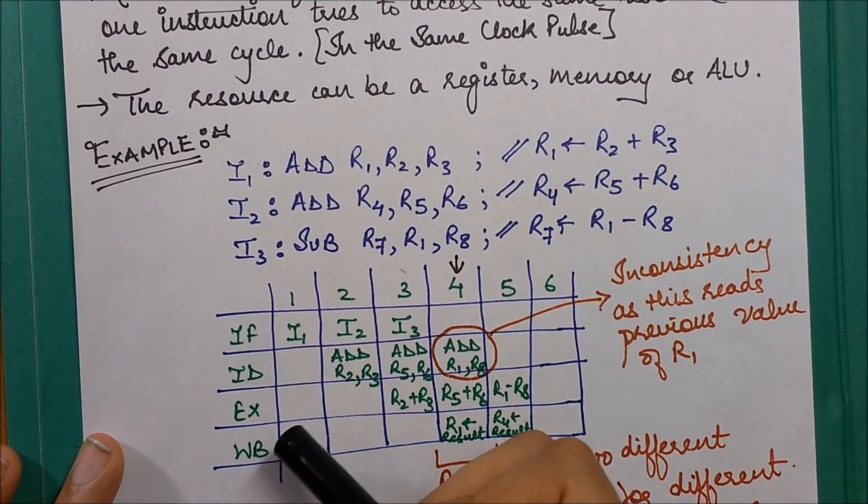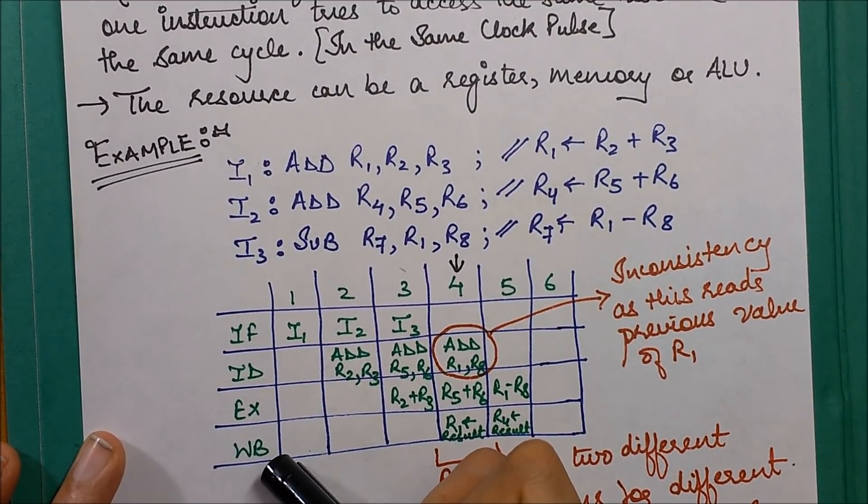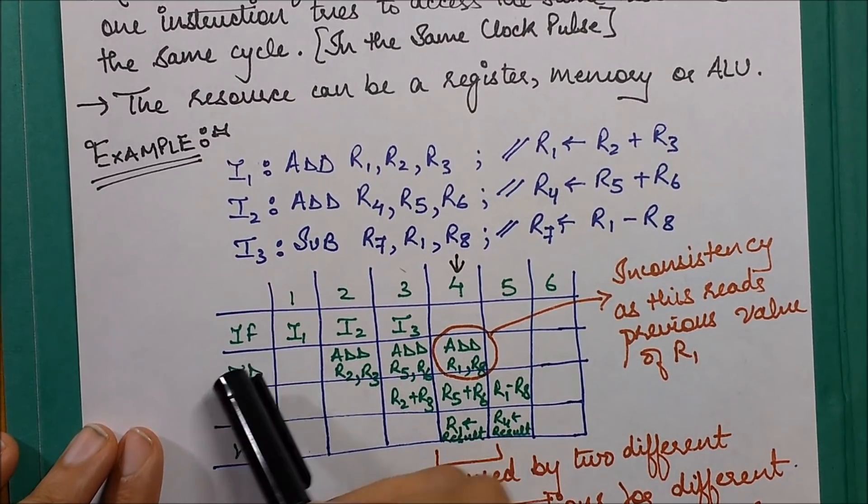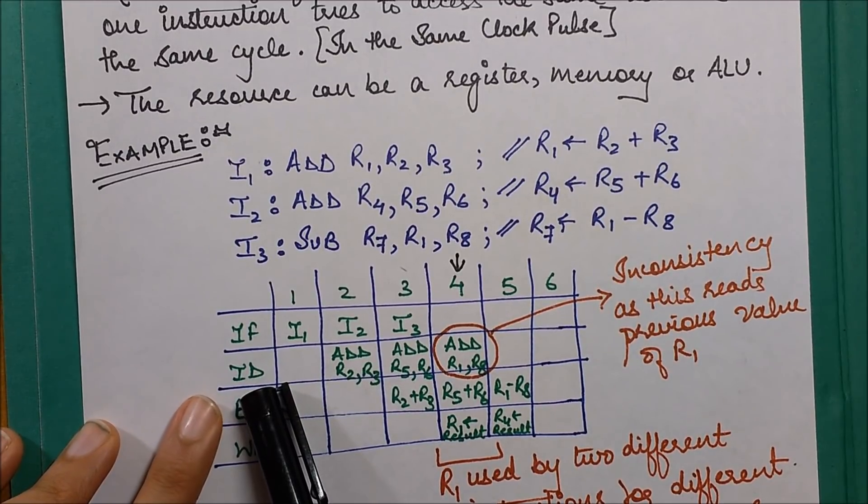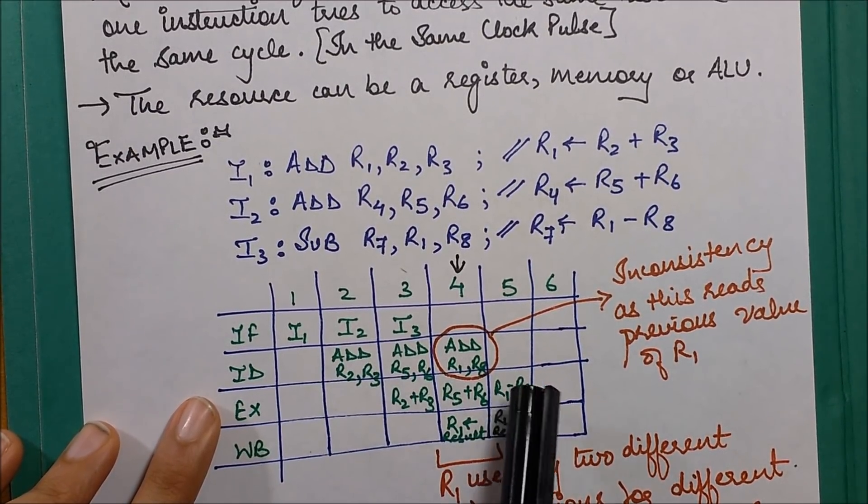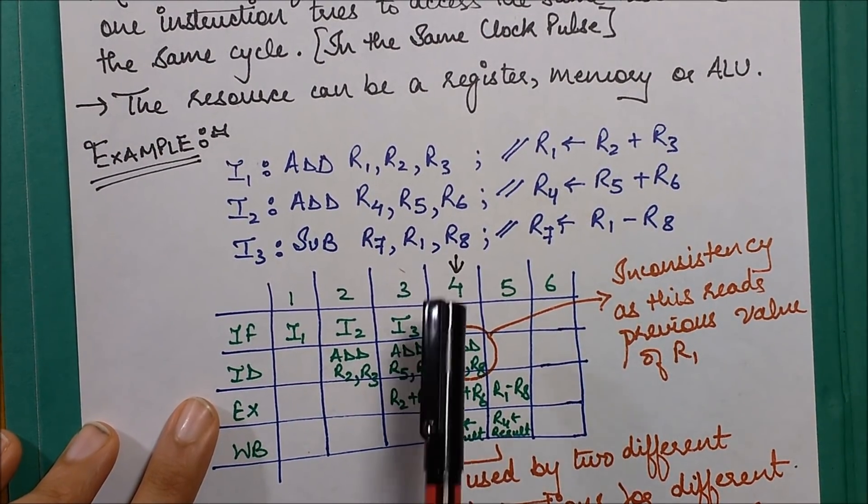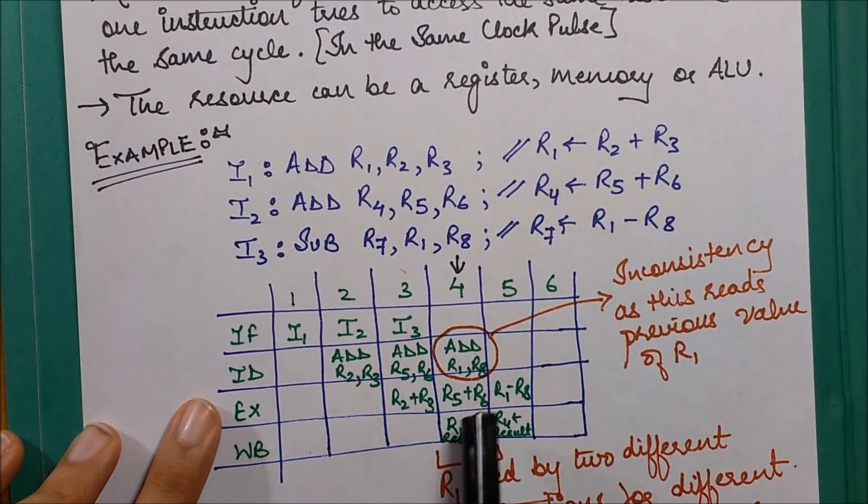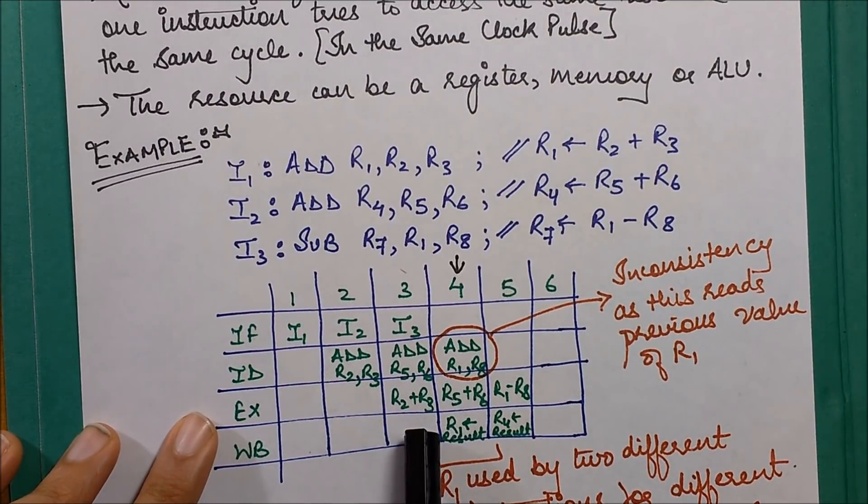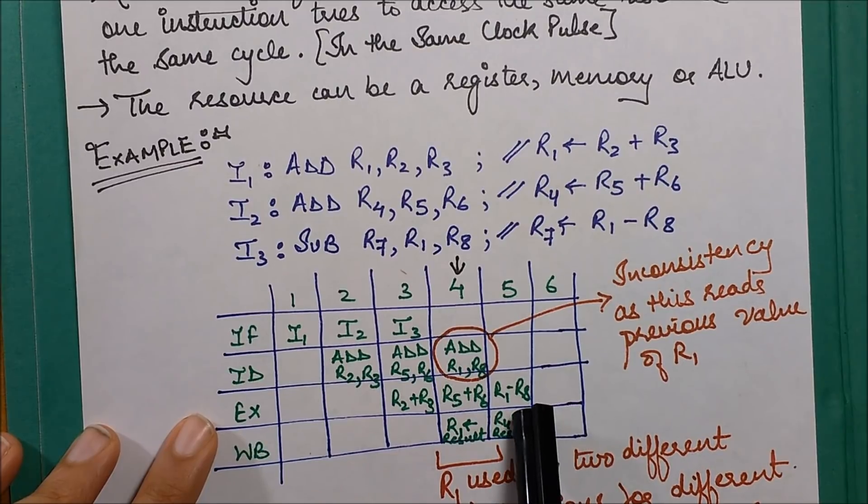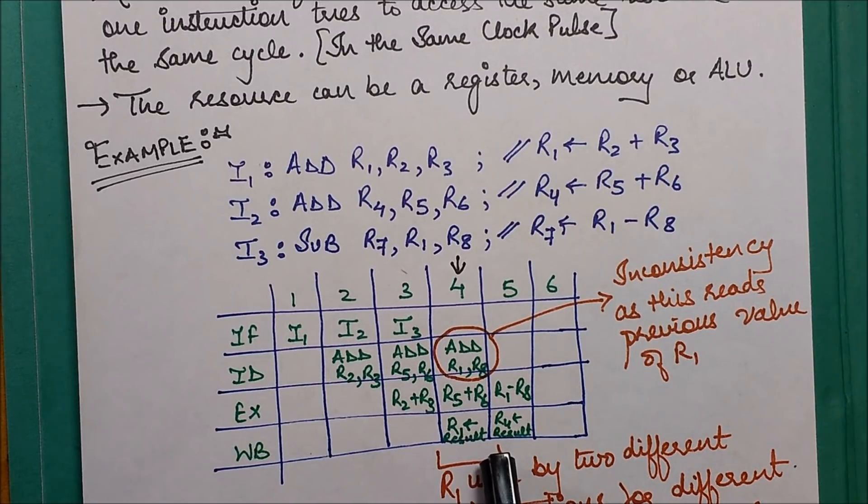In the instruction fetch, you fetch all three instructions one by one. Then in instruction decode, you start decoding these instructions - you write down ADD R2 R3, ADD R5 R6, SUB R1 R8. In execution, you start the execution phase - you add R2 R3, you add R5 R6, you subtract R1 R8. In the next clock pulse, you start writing back the results.